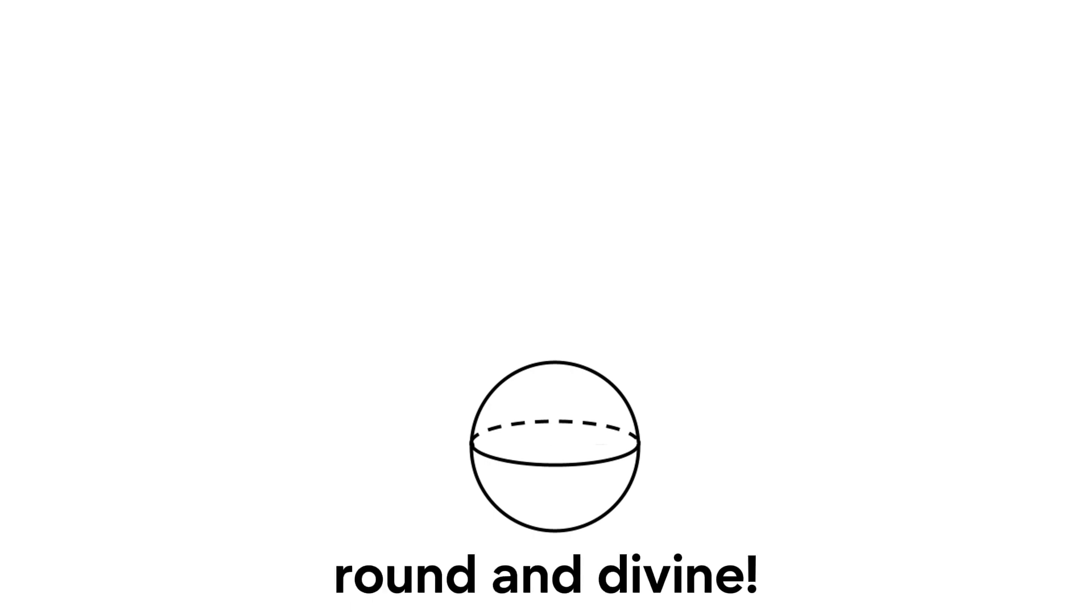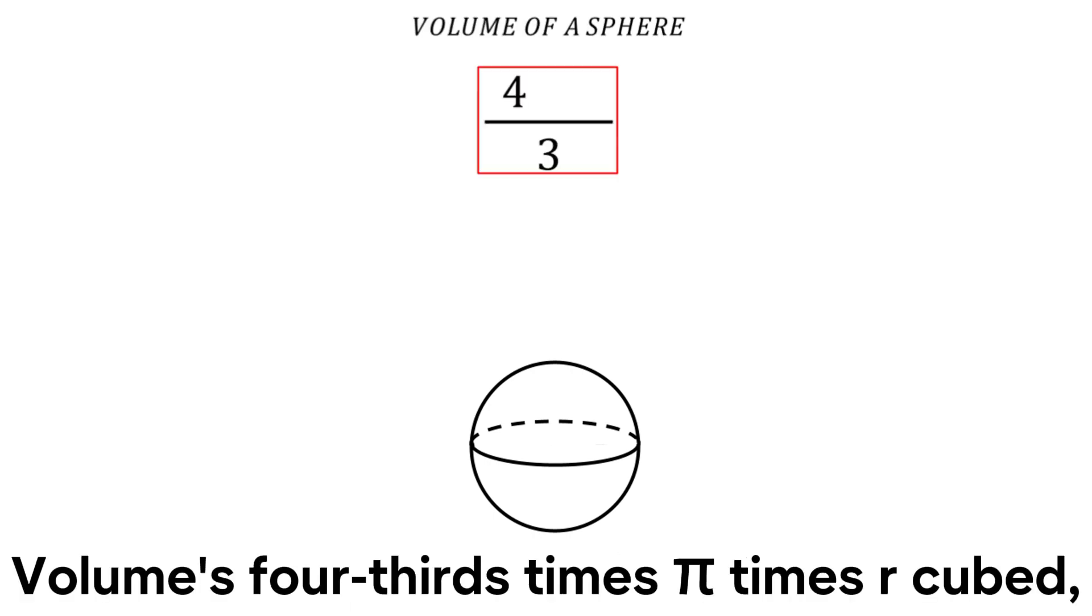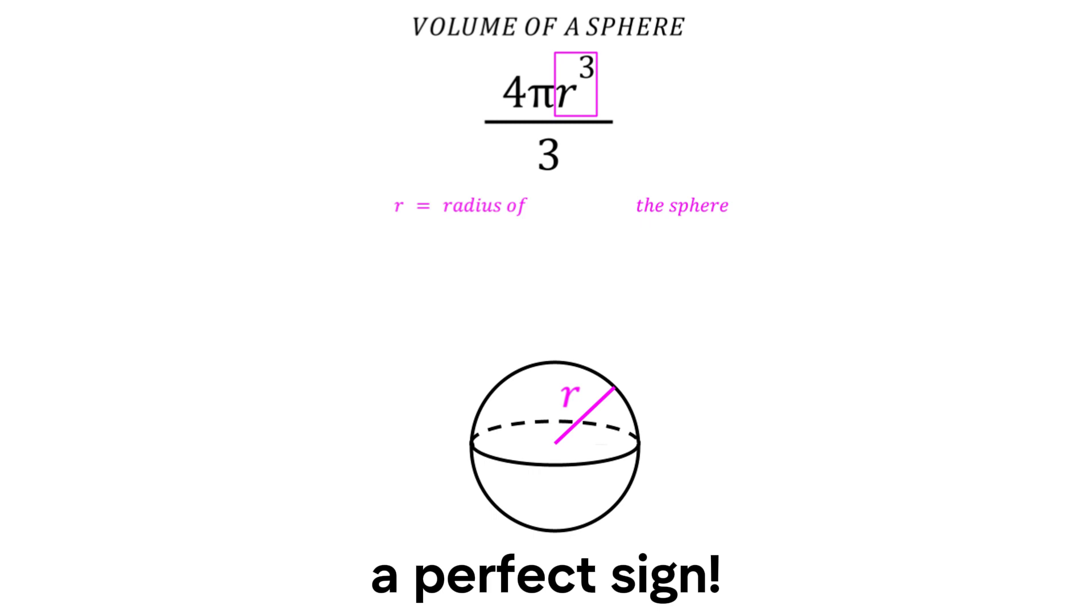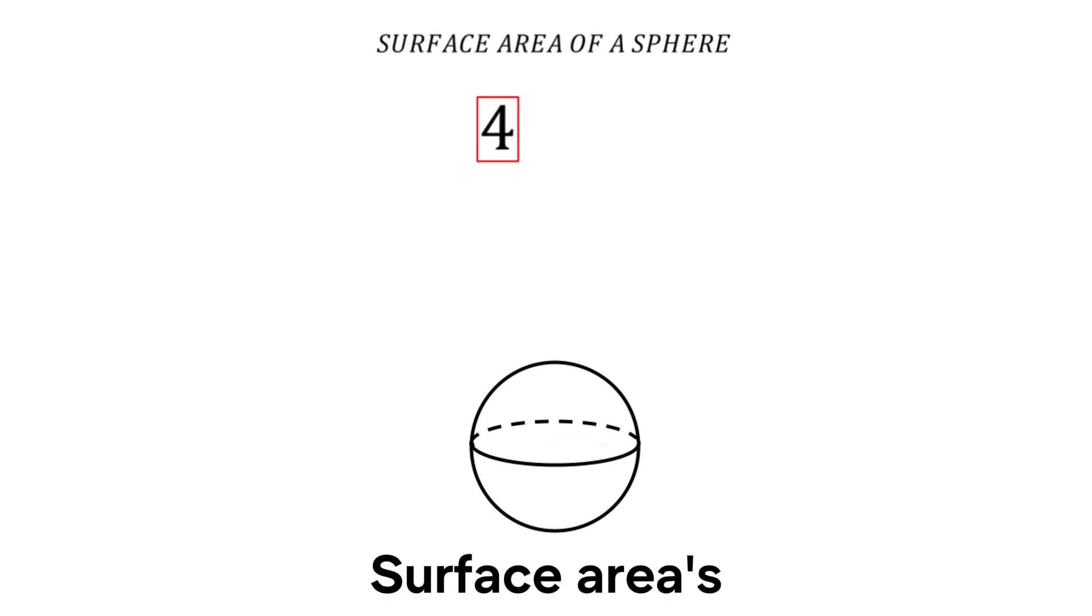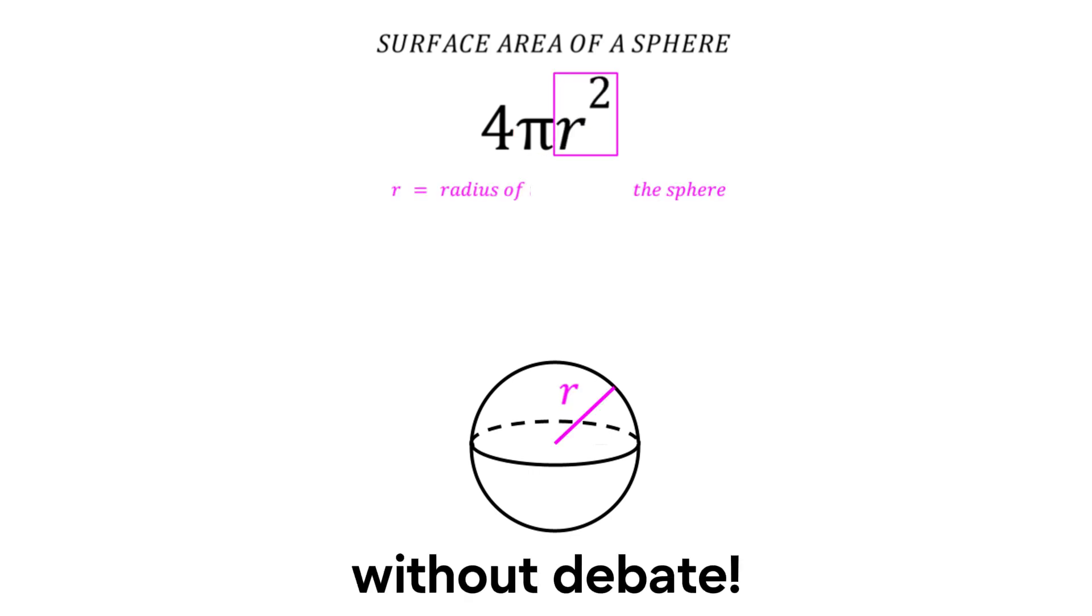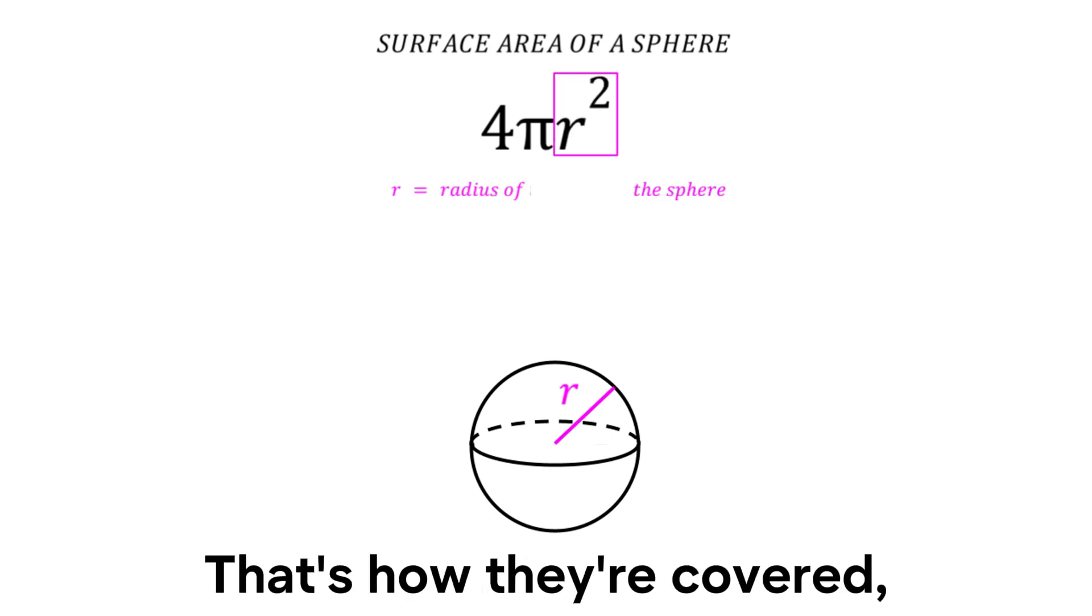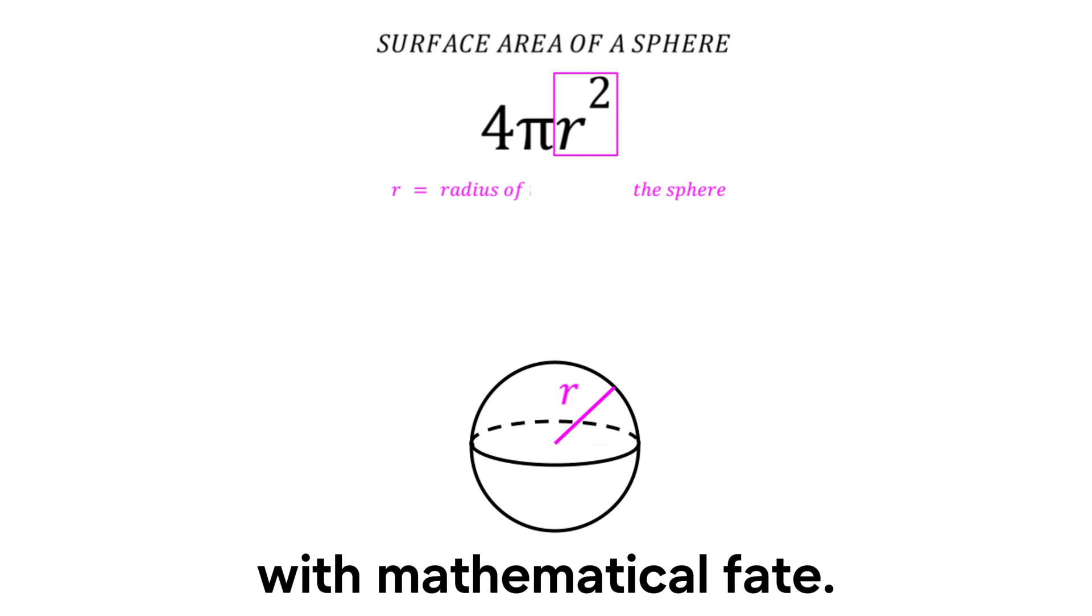Spheres, that last round and define volumes: four thirds times pi times r cubed, the perfect side. Spheres, that last round and define surface areas: points r cubed, the perfect side.